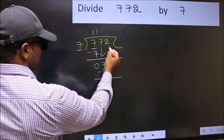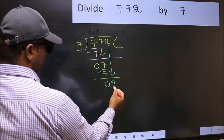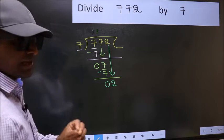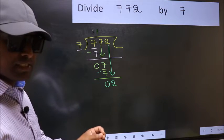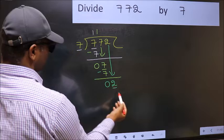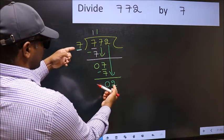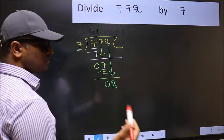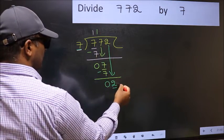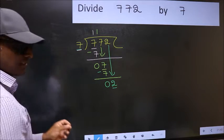After this, bring down the beside number. So 2 down. After this step, the mistake happens. And the mistake is this. Here we have 2, and here 7. 2 is smaller than 7. So what many do is, they directly put dot and take 0, which is wrong.